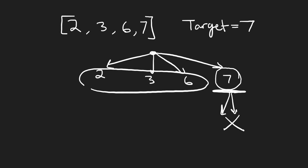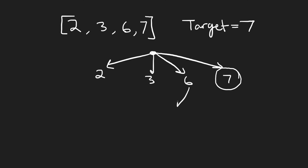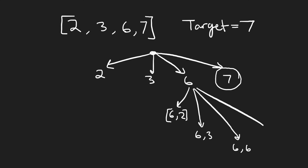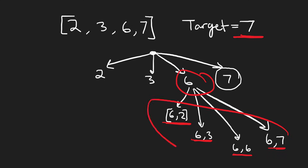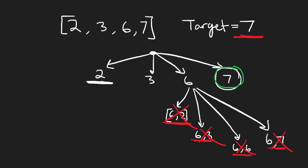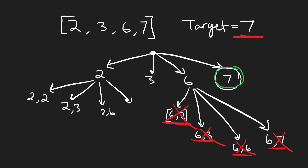Down the six branch, we can add two, three, six, or seven, but all of those lead to sums greater than seven, so we don't continue. Down the two branch, we can get two-two, then from there add another two, three, six, or seven — adding six gives eight and adding seven gives nine, both over target.